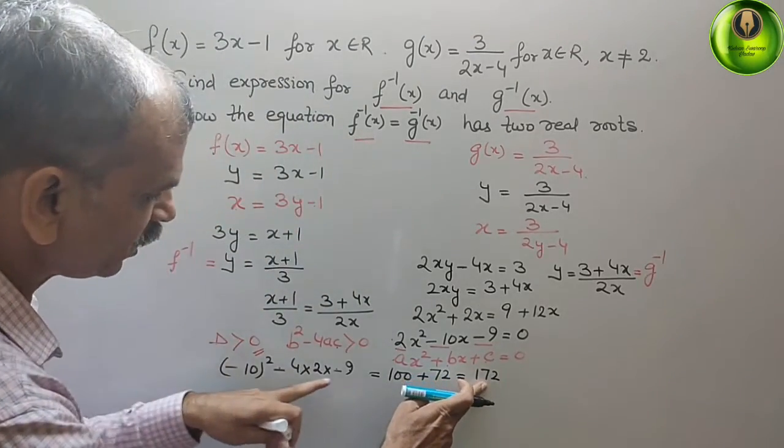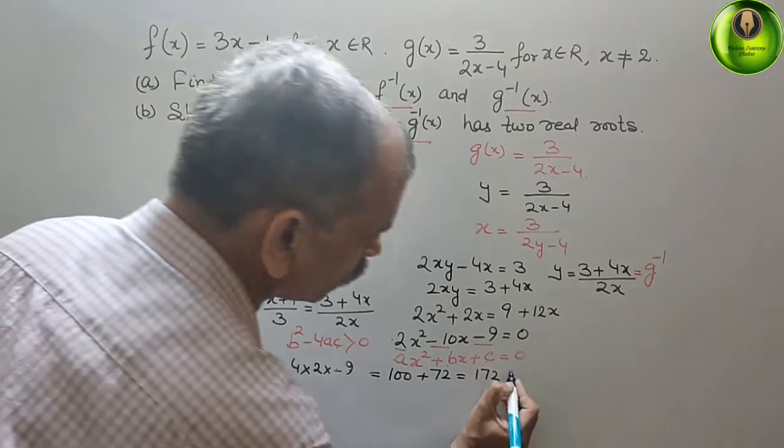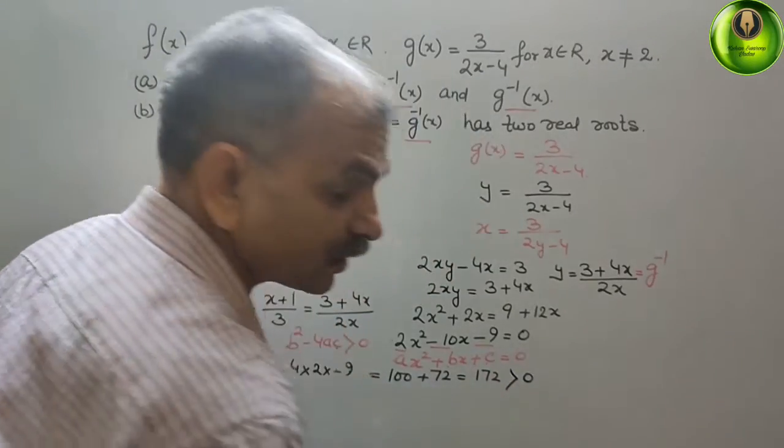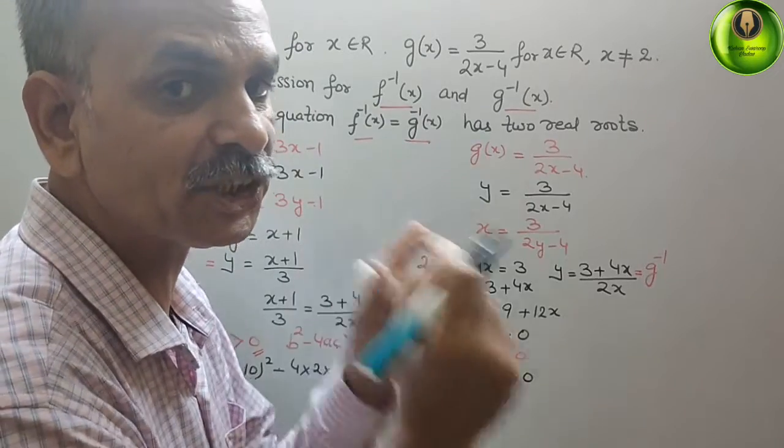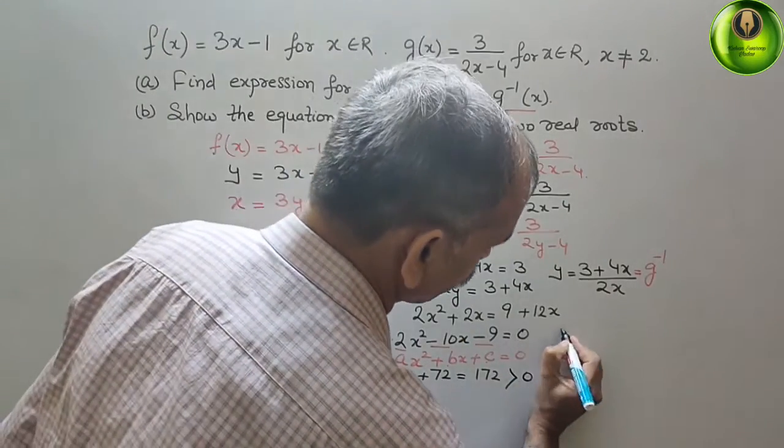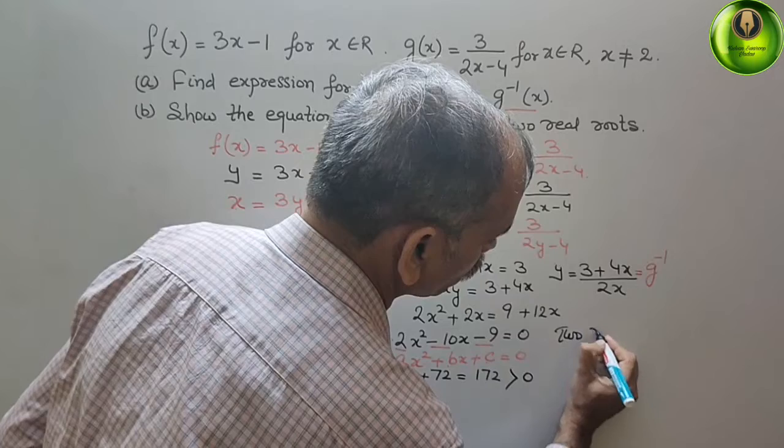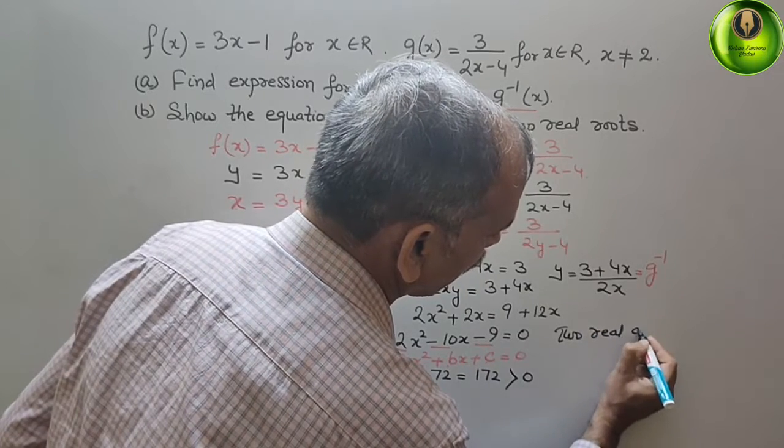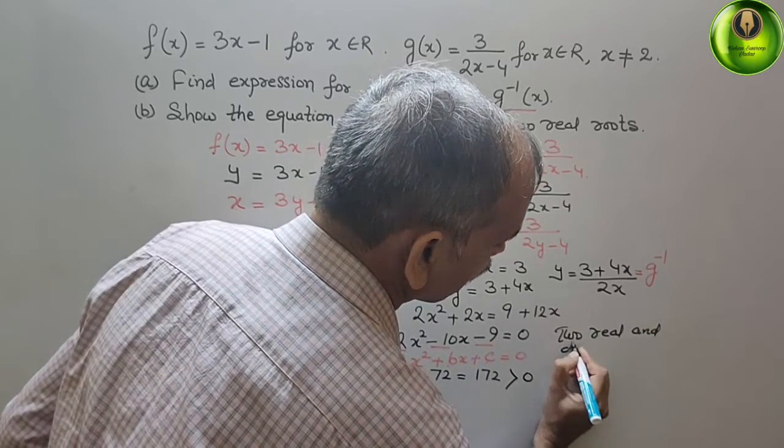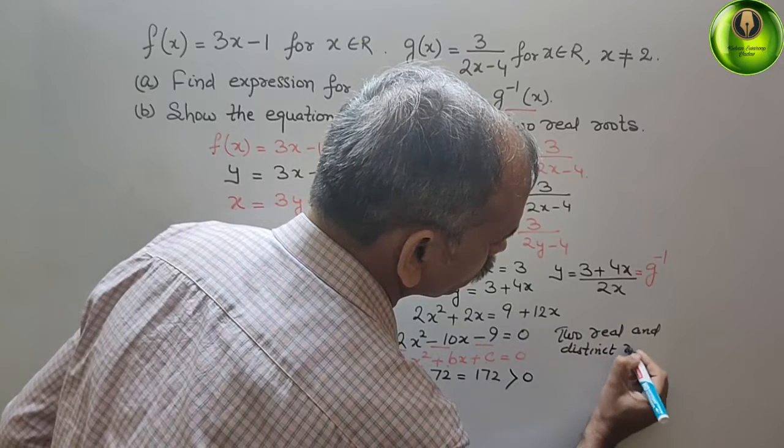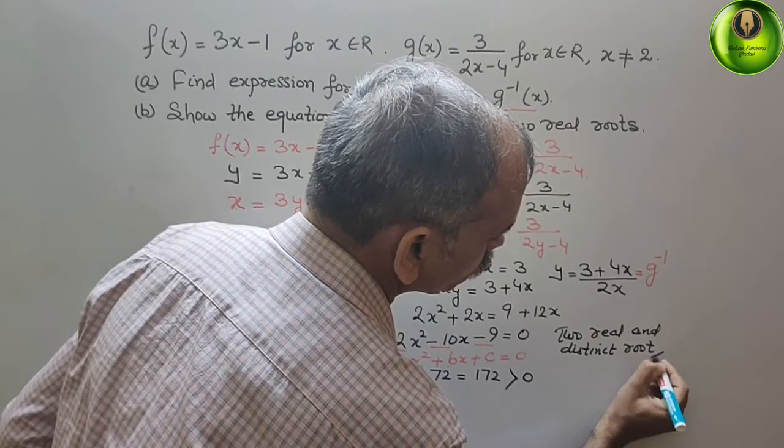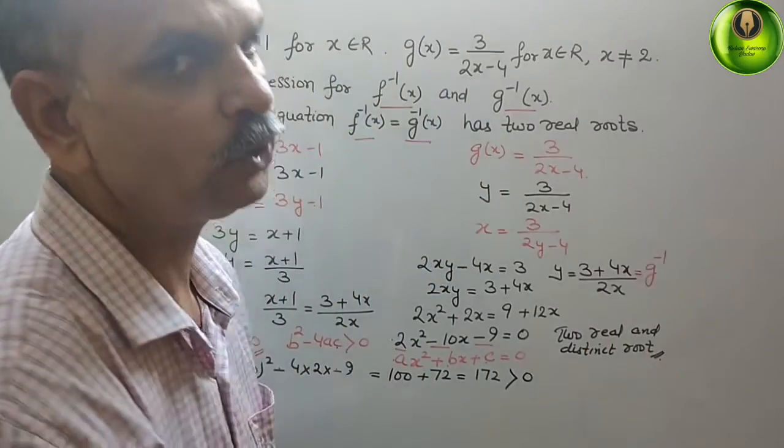So 172 is greater than 0. Therefore it contains 2 real and distinct roots. Like this we have to do it.